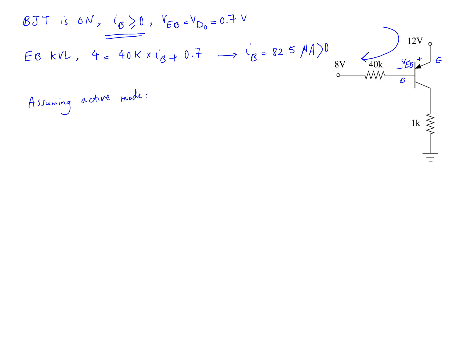Assuming active mode, I_C equals beta times I_base — this is the active mode condition. For a PNP transistor, V_EC must be greater than or equal to V_D0, which is 0.7 volts. Since beta equals 100, I_C equals 100 times 82.5 microamps, which gives I_C equal to 8.25 milliamps.